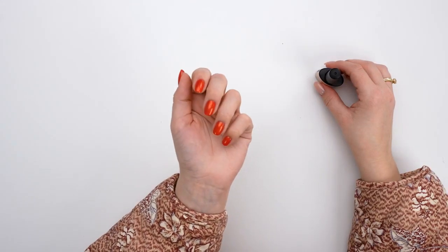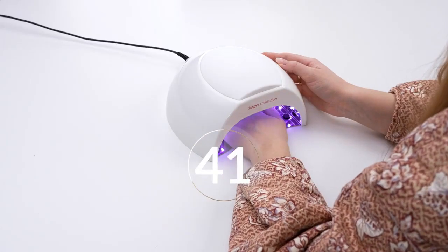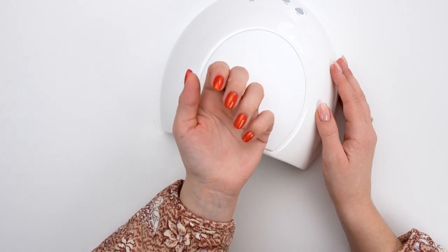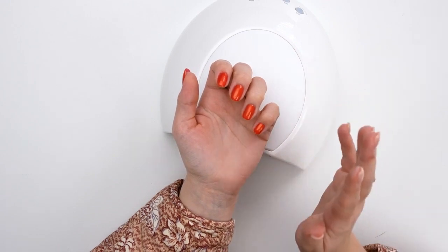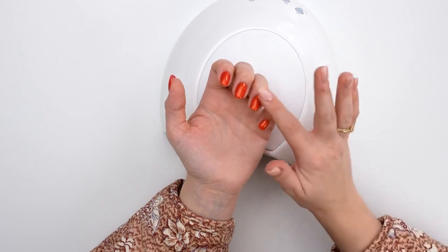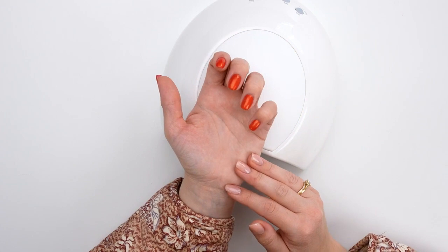After applying the top coat to all five nails, cure it in the lamp for a minute. When the top coat has cured for a minute, there is no tacky layer left, that sticky feeling. Because our top coat is a no-wipe top coat, which means you don't have to wipe. After curing for a minute, it is fully ready for the next step.